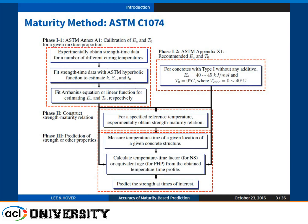The second step is that once you get one of those values, you are going to construct a strength-maturity relationship at the specified temperature. Number three is almost like an end-user level application — you measure the concrete temperature, and from the temperature history, you calculate the temperature-time factor for the Nurse-Saul method or the equivalent age for the FHP method, and from those values you predict the strengths.